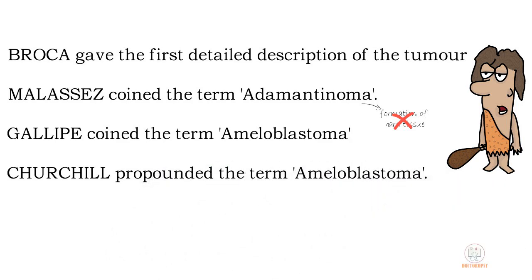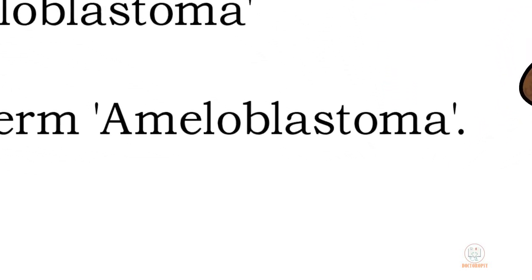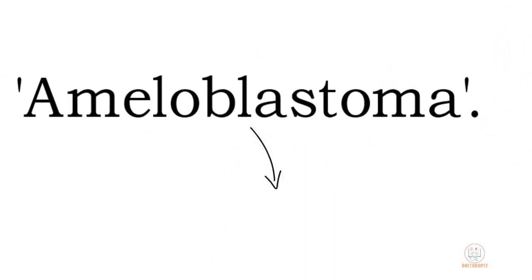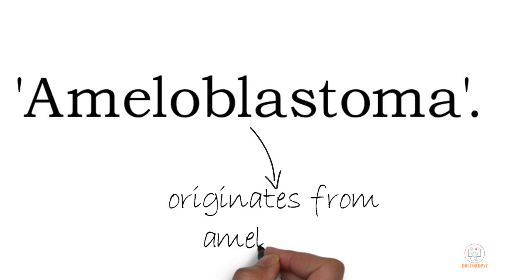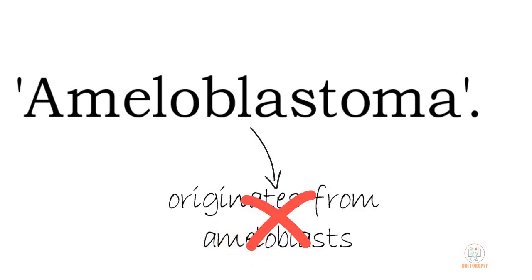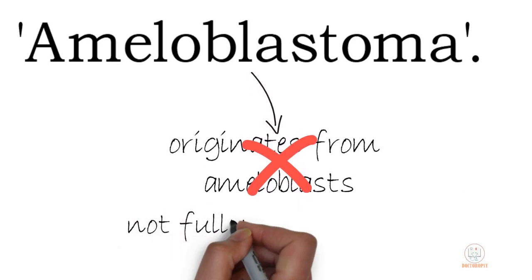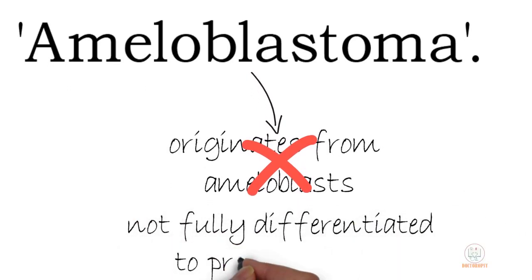The term ameloblastoma can also be considered a misnomer because it implies that the tumor originates from the ameloblasts, which is not true. The cells of the tumor are pre-ameloblasts or immature ameloblasts, as they are not differentiated enough to form enamel.